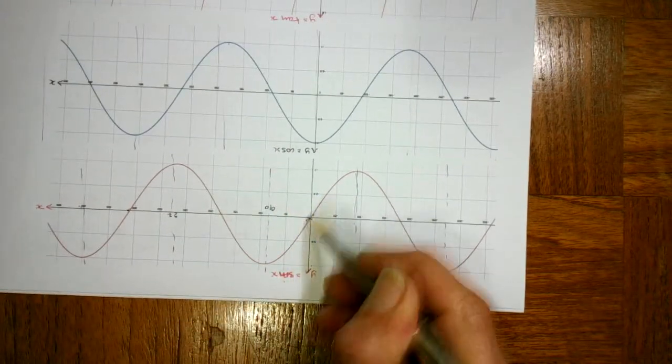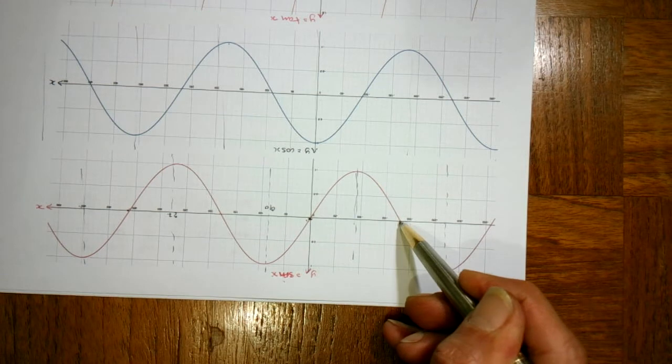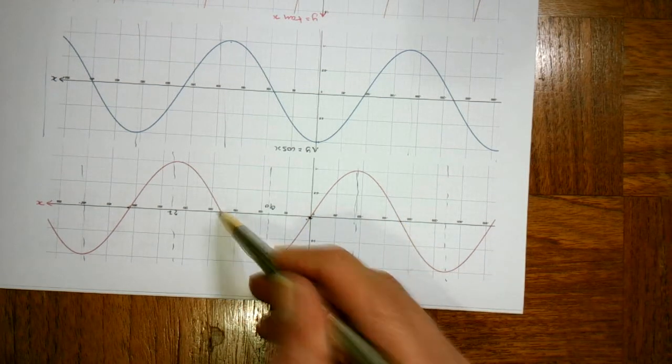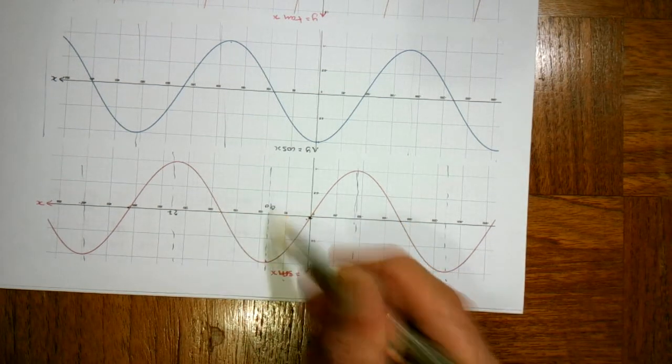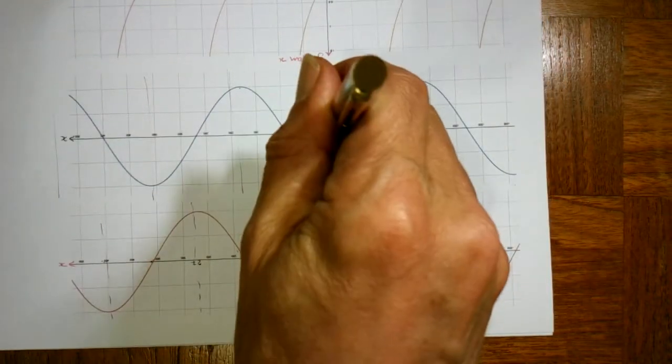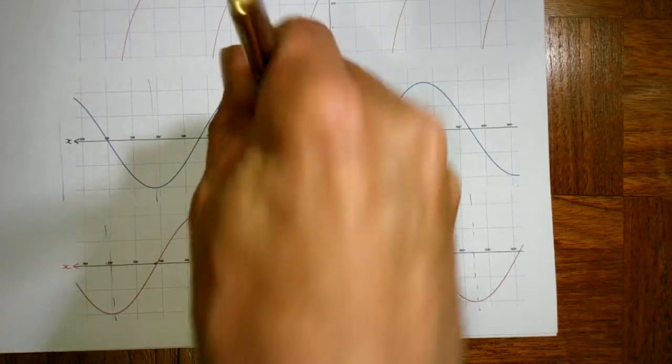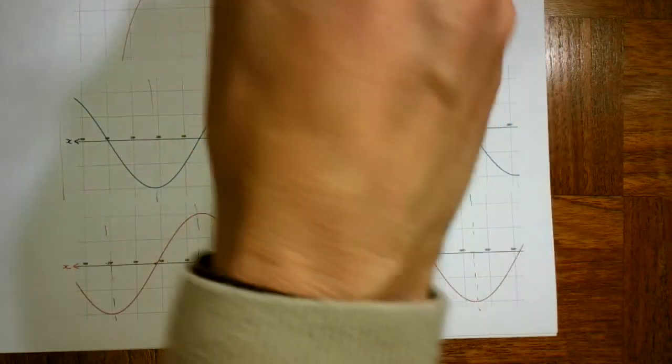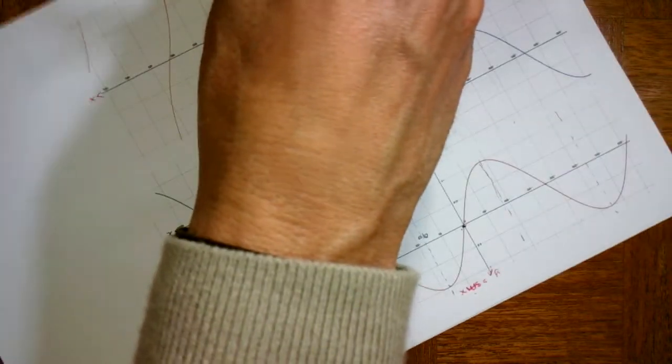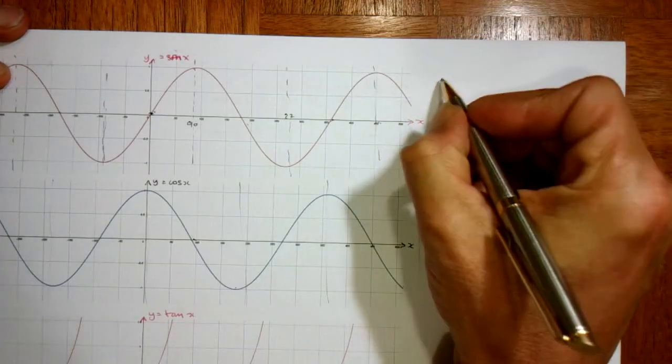On the right-hand side from 0, it goes up, comes down at 180. On the left-hand side, it goes down and back up to minus 1 at minus 90, then back up. The cos graph, turning around here, looks exactly the same. And the tan graph, the rotational symmetry is at 0.